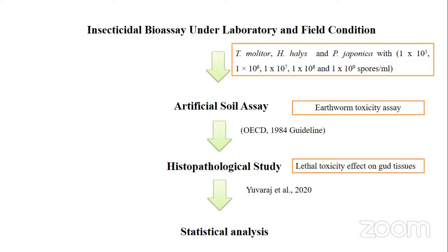Insecticidal bioassay was performed at two conditions — laboratory and field level — using three insect species with five different concentrations. Soil cultivation assay was performed for earthworm toxicity using OECD guidelines. Histopathological studies were also performed for lethal toxicity effects on earthworm gut tissue. Data was analyzed using SPSS and PRISM 5 software.